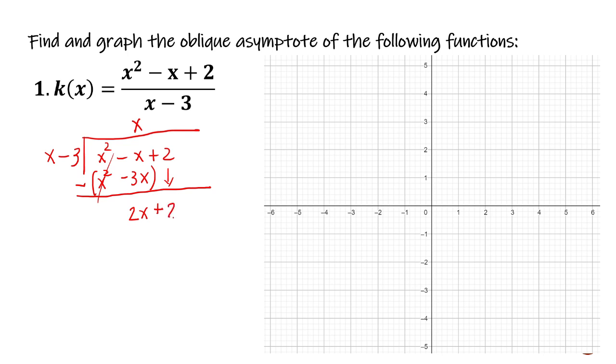Negative x minus negative 3x is positive 2x. We are going to bring down the last term, that is positive 2. And then we repeat step 1 again. Divide the first term here by the first term of the divisor. So 2x divided by x. If you're confused, write it vertically. 2x divided by x, cancel, cancel. The quotient is 2.